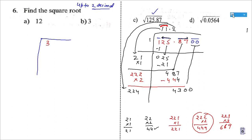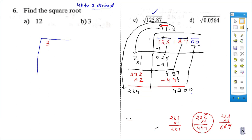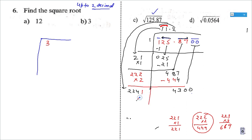Now I bring down the next pair. Then I take double of 11 — double of 11 is 22. Next to 22, I try placing a digit. If I write 2, then 222 × 2 = 444. I try 1: 221 × 1 is smaller. 224 × 2 = 448 — that's bigger. Going with 1: 2241 × 1 = 2241. Subtracting: the remainder comes out. The answer comes to approximately 11.21.